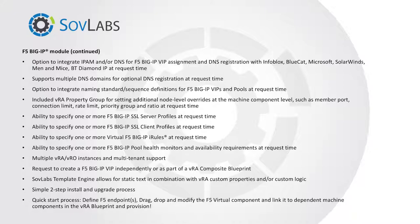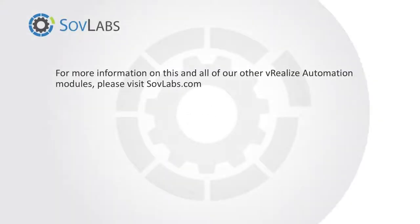SovLabs' template engine allows for static text in combination with VRA custom properties and/or custom logic. It's a simple two-step install and upgrade process with a quick-start workflow: define F5 endpoints, drag and drop and modify the F5 virtual component, link it to dependent machine components in the VRA blueprint, and provision. For more information on this and all other SovLabs modules, please visit SovLabs.com.